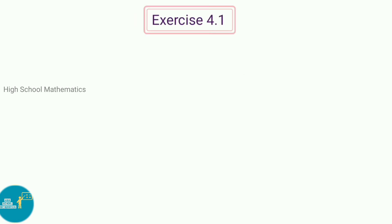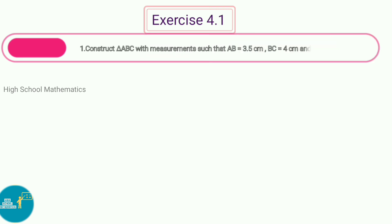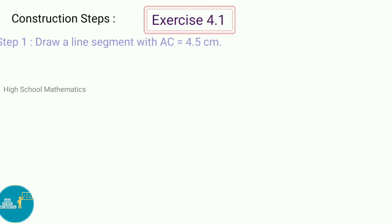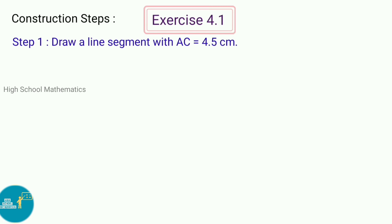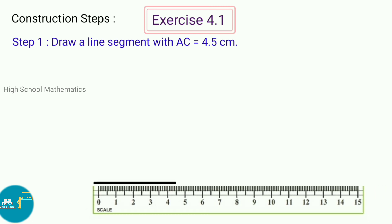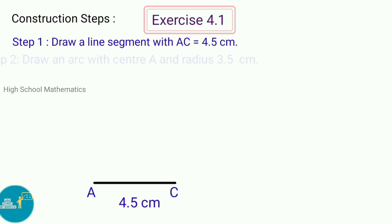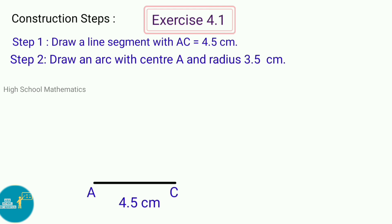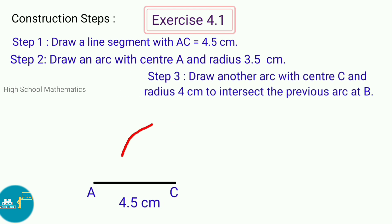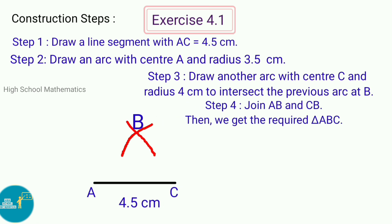Exercise 4.1, first sum: Construct triangle ABC with measurements AB equal to 3.5 cm, BC equal to 4 cm, and AC equal to 4.5 cm. Construction steps — Step 1: Draw a line segment with AC equal to 4.5 cm. Step 2: Draw an arc with center A and radius 3.5 cm. Step 3: Draw another arc with center C and radius 4 cm to intersect the previous arc at B. Step 4: Join AB and CB. Then we get the required triangle ABC.